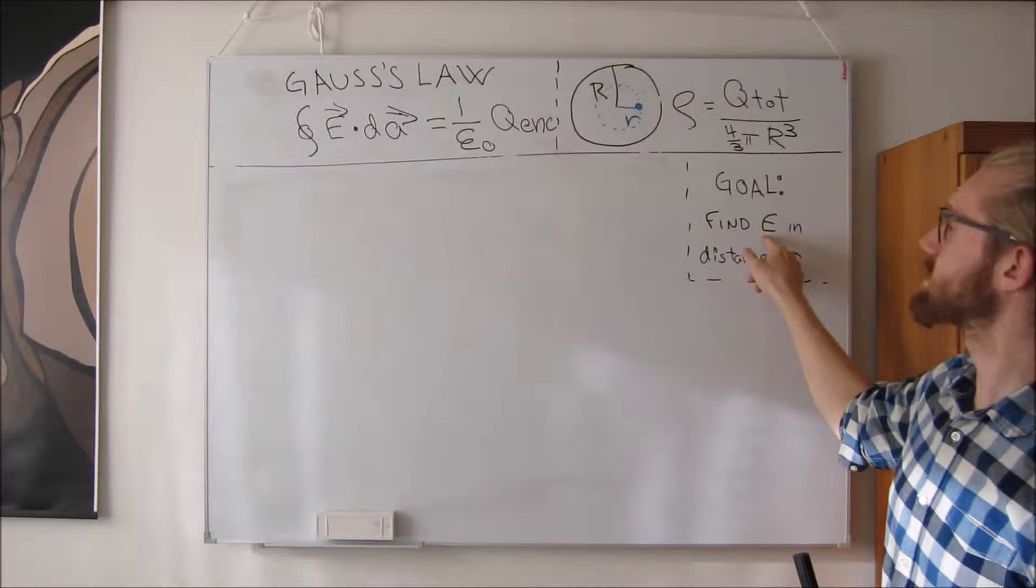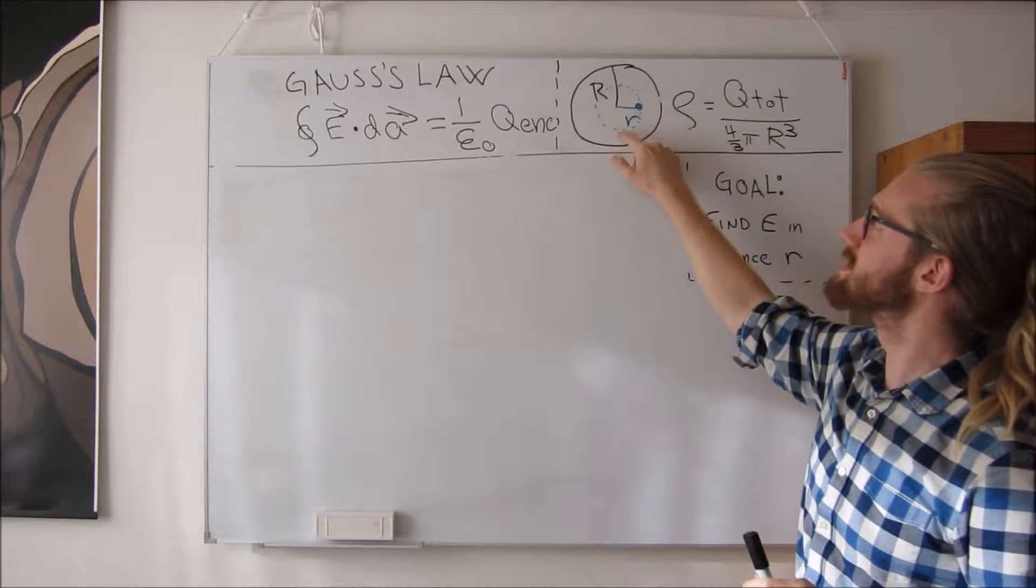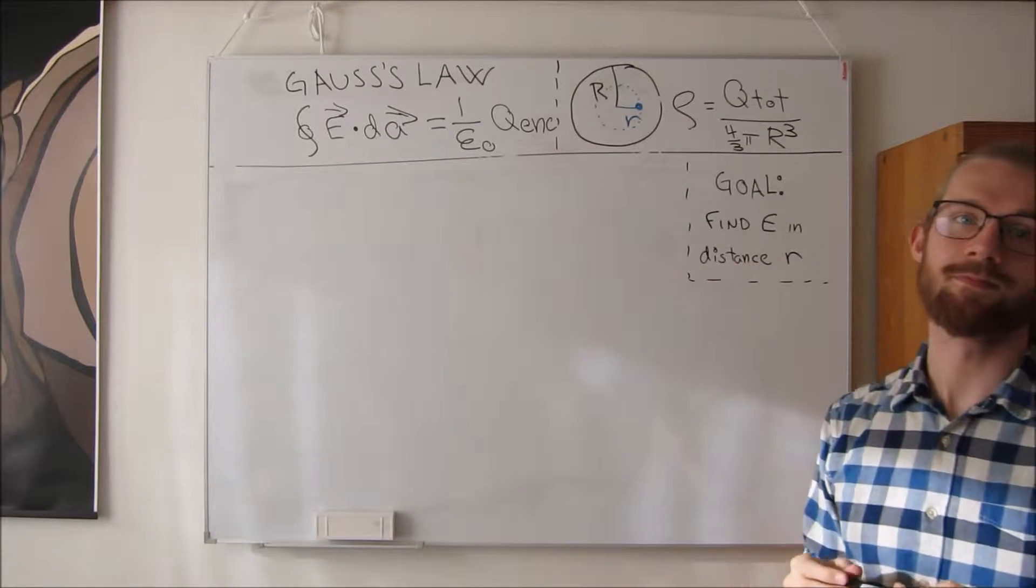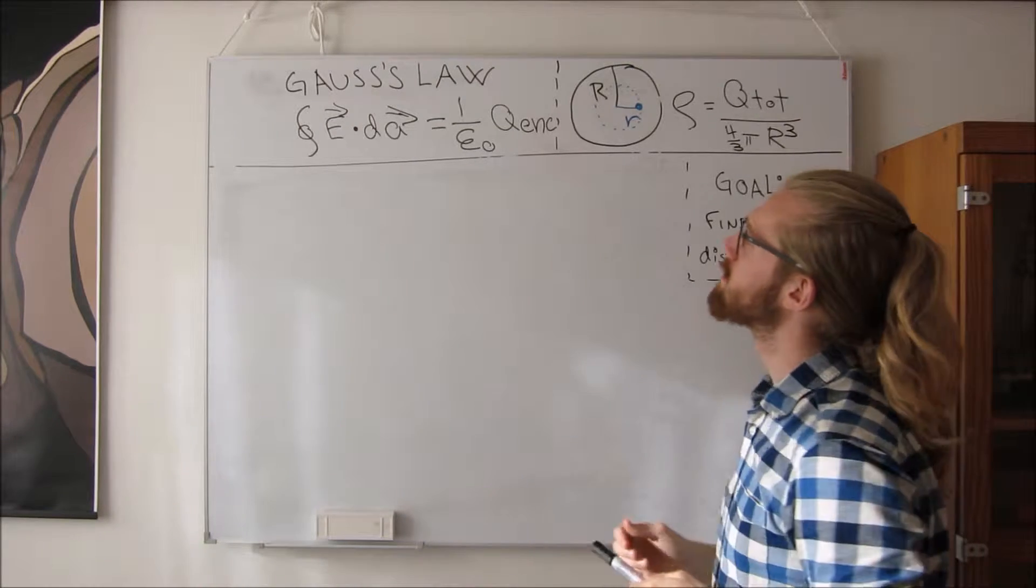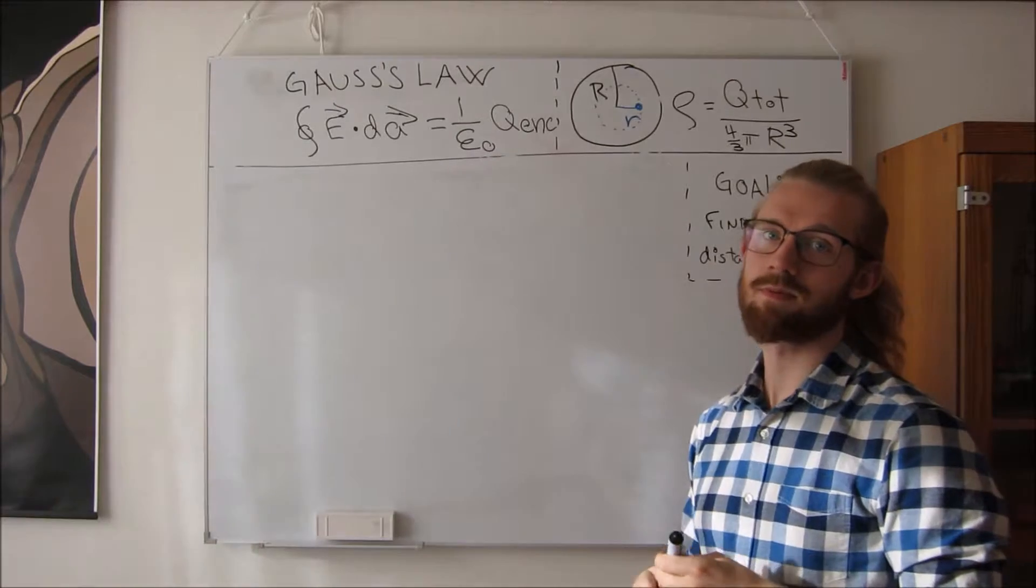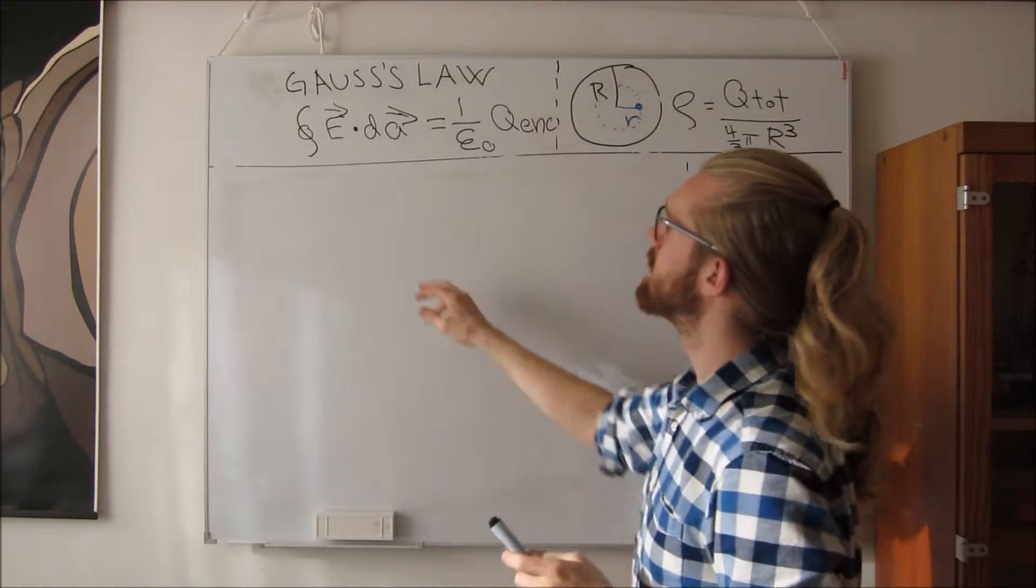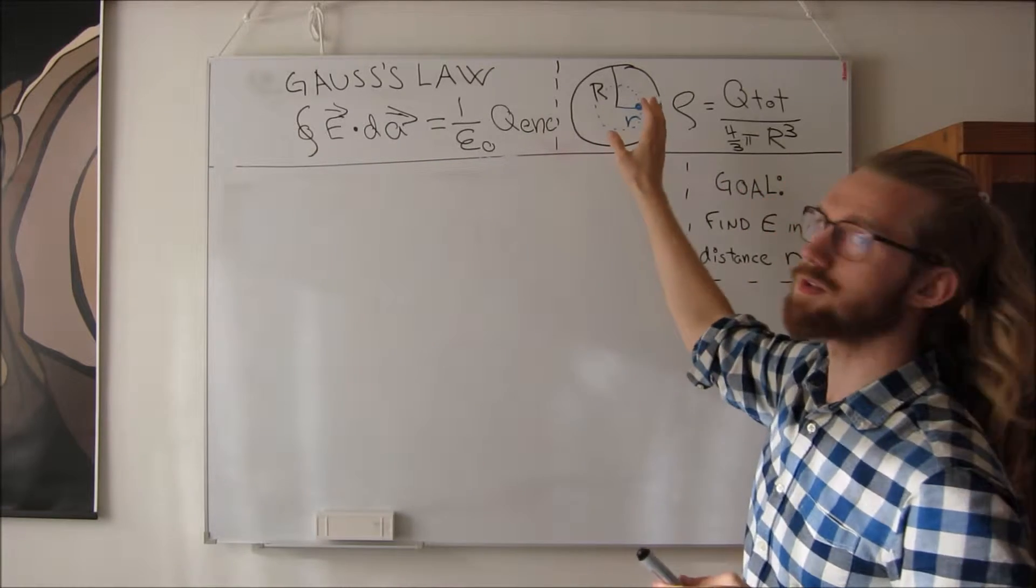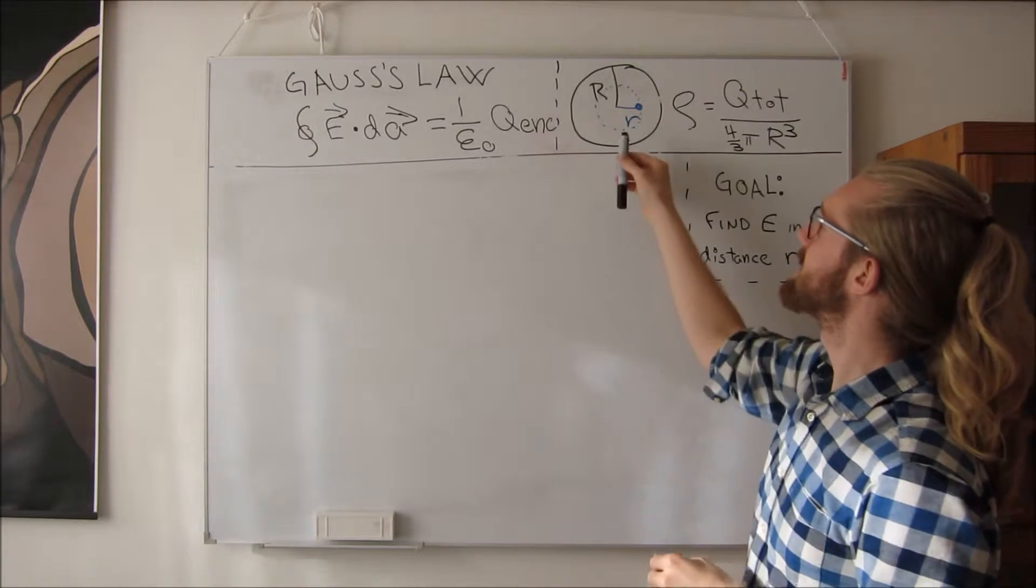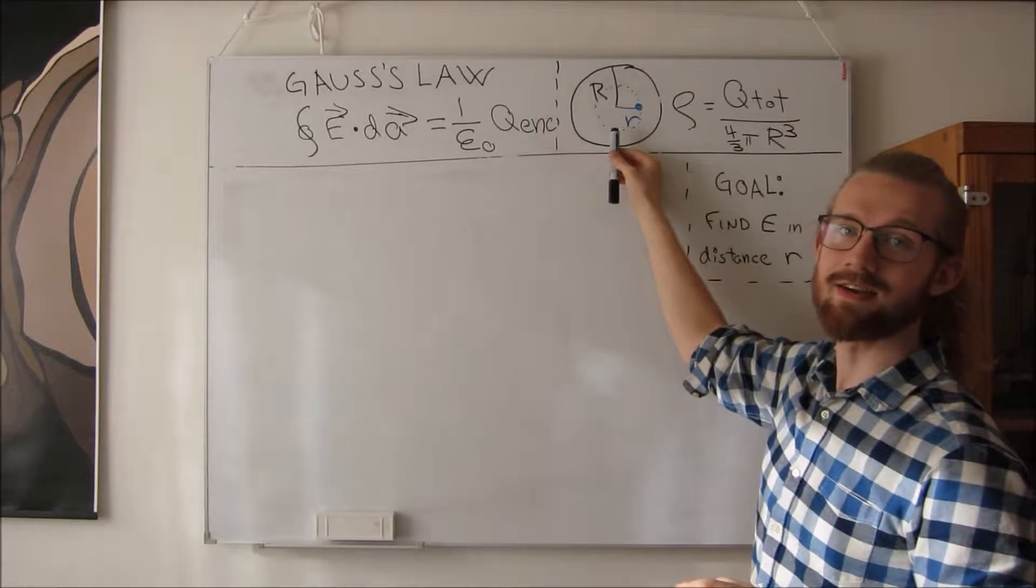So the goal: find the electric field strength at the distance r from the origin. If we look at the left side of Gauss's law, we see that it's a vector problem. However, the vector E, in this spherical problem, points directly or radially outwards.